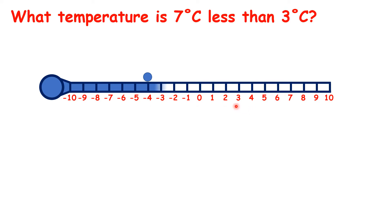So if the temperature starts at 3 degrees and then gets 7 degrees colder, the new temperature is minus 4 degrees. But again, let's use a quicker method rather than relying on our number line.